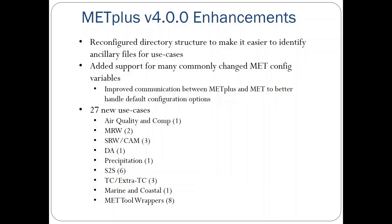Overall for METPlus, the enhancements include reconfiguring the directory structure to make it easier to identify ancillary files for use cases. For example, if we were using Python embedding, the Python script used for an example use case is now included in a directory named after the use case, as well as any MET Config files with specific configuration options that can't be handled within the METPlus configuration options.